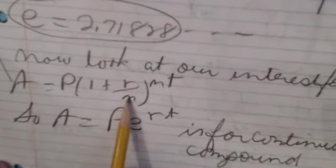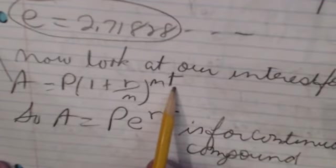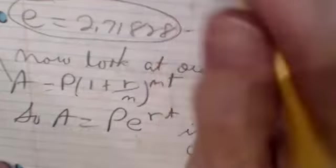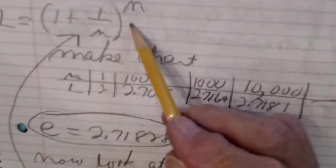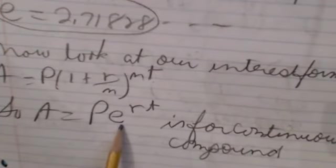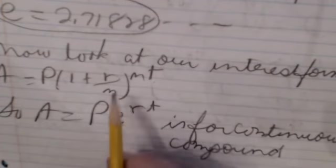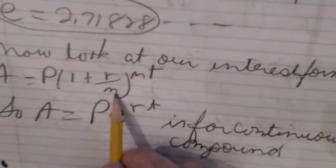So what it boils down to then is that the original formula that we had, 1 plus R over N to the NT, that has the same pattern that this had up here. So the limit of that expression was E, and that's where you get this little formula from. The good part about it, all we've got to do is just take each of these formulas and use them as necessary. If it's continuous, you're going to always do each formula. If it is compounded so many times per year, you're going to use this formula right here.